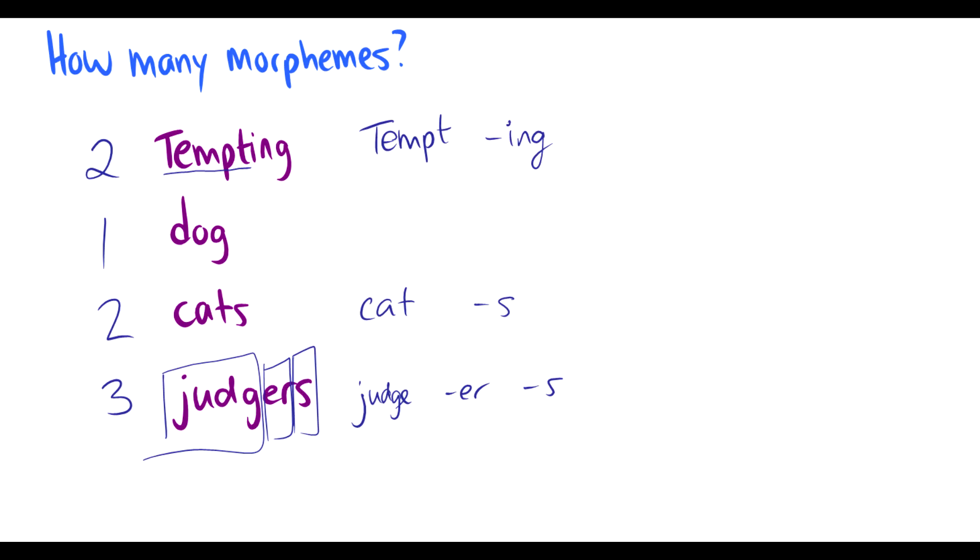So we have this judge and then we have this -er that makes it a judger so that's a person. And then judgers is multiple people. So this word judges is composed of three different units of meaning that we aren't even aware of is happening when we do it.